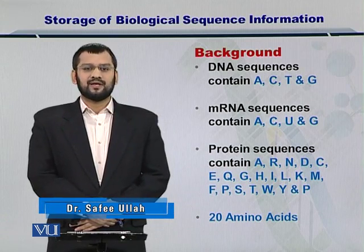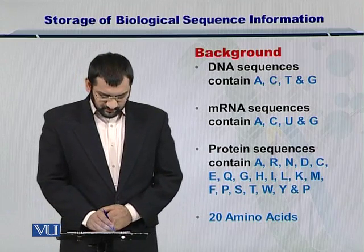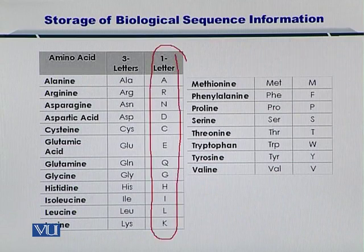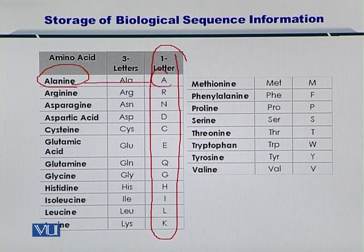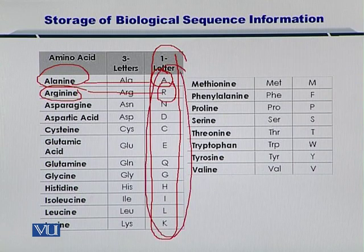For the proteins, you can have 20 different amino acids which are listed here for you. So these amino acids can be represented by their one letter symbol. For instance, alanine has A to represent it, arginine has R. So a protein can be simply narrated by combinations of these alphabets.